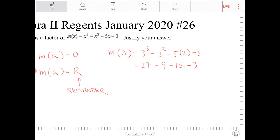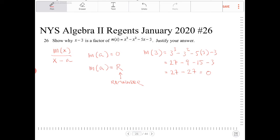If you notice, 9, 15, and 3, those negative numbers combine together to make minus 27. So 27 minus 27 is, in fact, equal to 0. So yes, x minus 3 is a factor of m of x according to the factor slash remainder theorem.